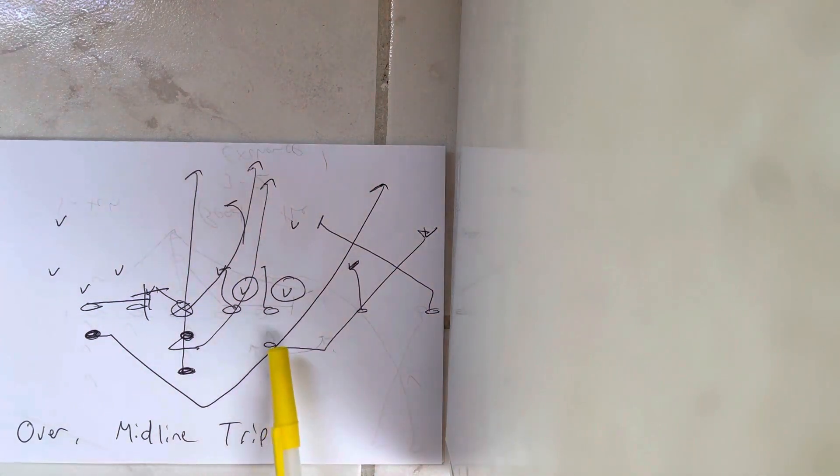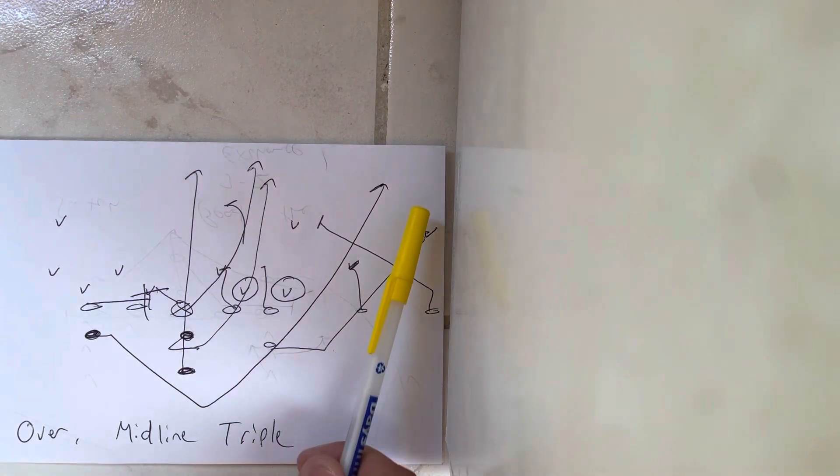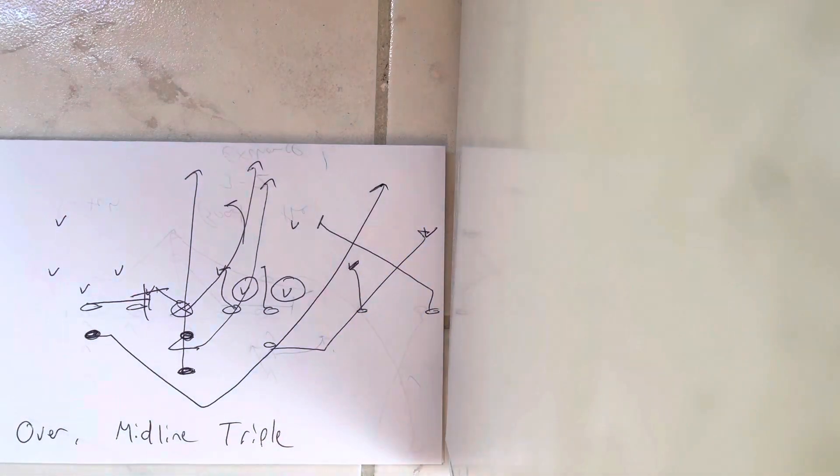The A-back's going to take three flat steps, step at 45 degrees. He's going to trap the corner, helmet to the left—right for him—throw him, drive him out of bounds.